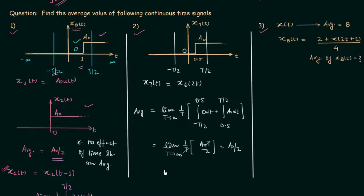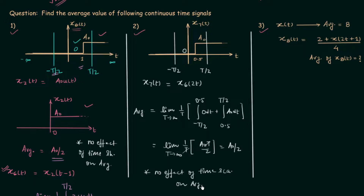So we can say that time scaling has no effect on the average value. There is a homework problem for you: find the average value of signal y(t) = x7(−t), where time reversal has been performed. Tell me whether time reversal has any effect on the average value or not. Post your answer in the comment section.